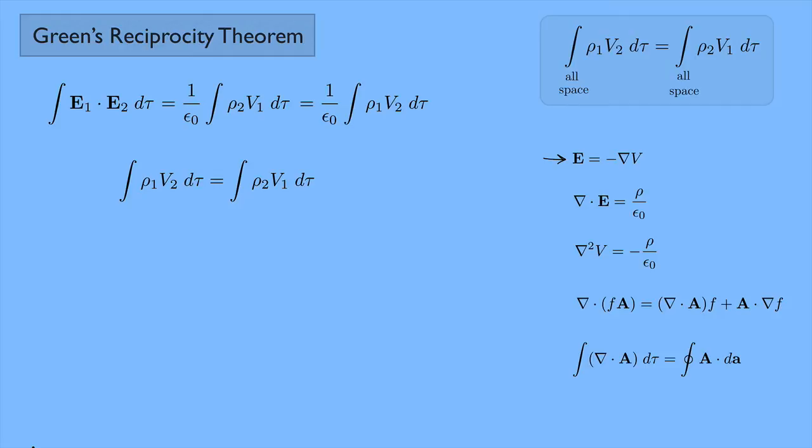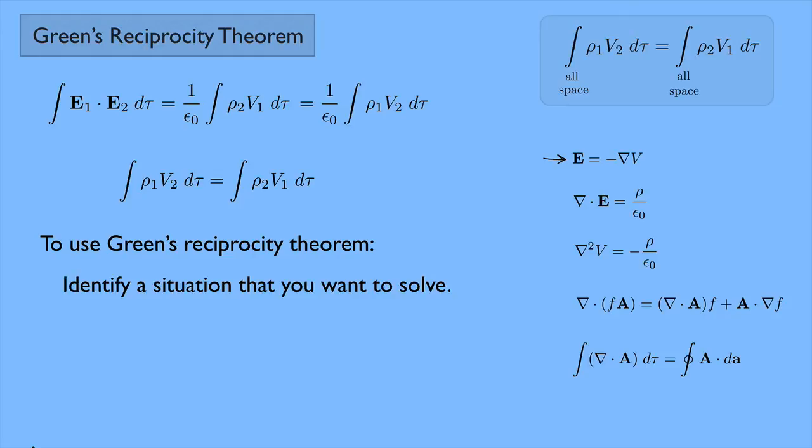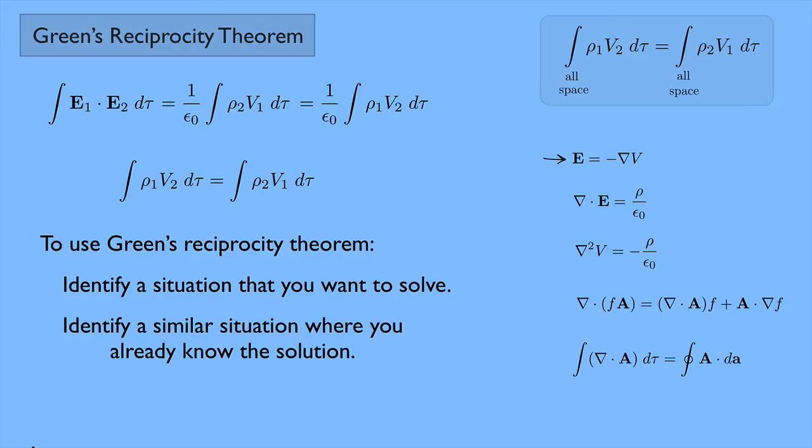What about actually using the theorem? I won't show examples in this video, but here are a couple of quick notes. The basic idea is you have a situation you want to solve and a second situation where you already know the solution. You try to connect the two situations in a way that allows you to use Green's reciprocity theorem to simplify the problem.